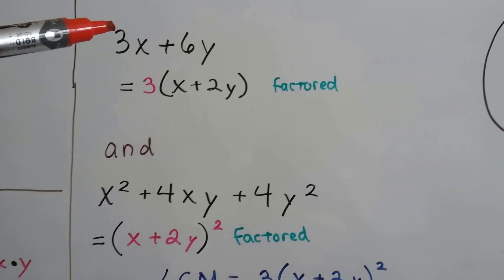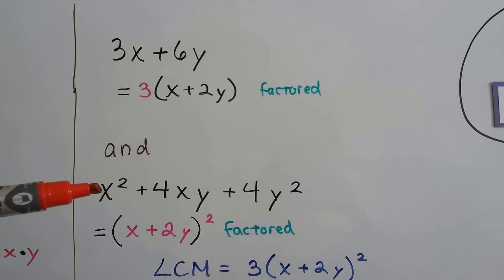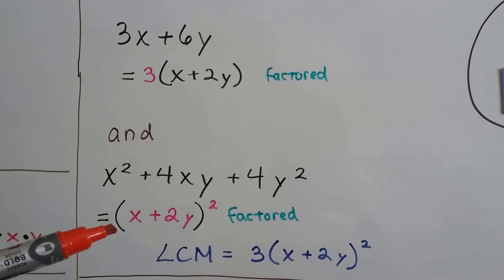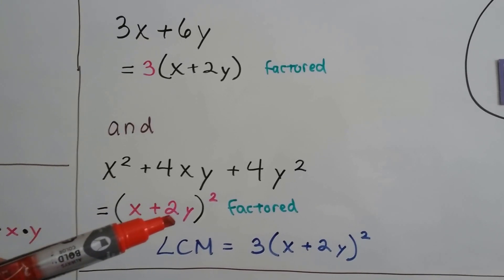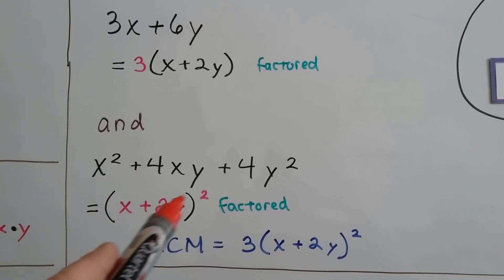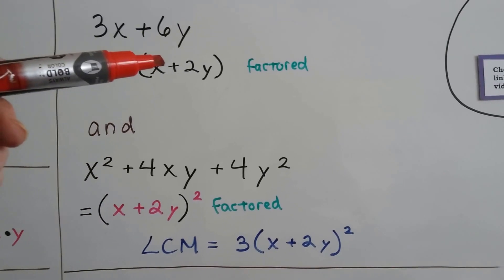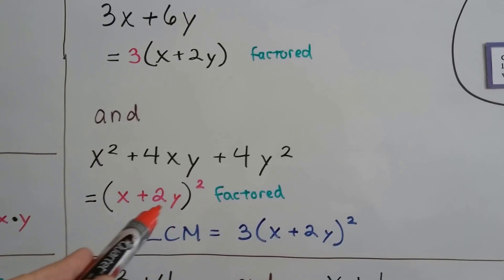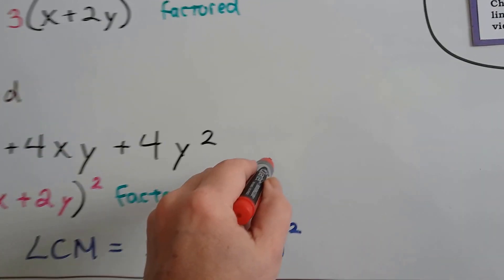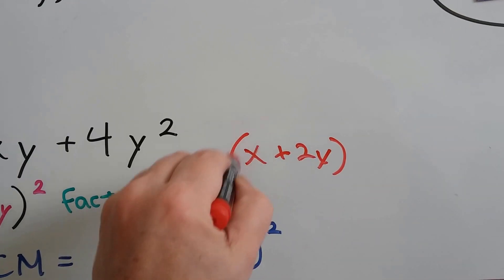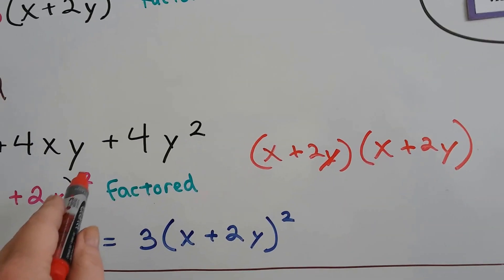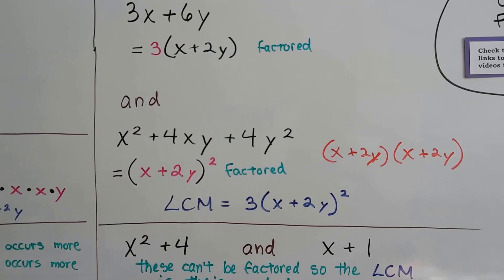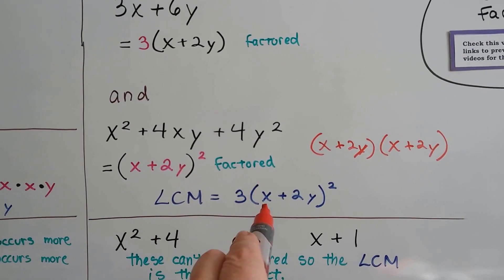Now we have 3x + 6y and x² + 4xy + 4y². Factoring the first gives us 3(x + 2y). Factoring the second trinomial gives us (x + 2y)². It's a binomial square. Since there's already an (x + 2y) in the first, but the second has (x + 2y) squared — meaning two of them — we use the squared version because that's where it occurs more. We also need the 3 from the first expression. So our least common multiple is 3(x + 2y)².